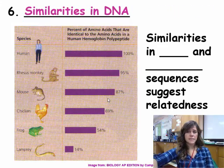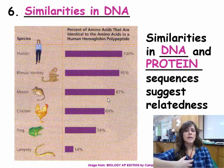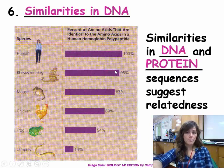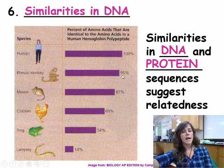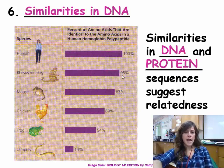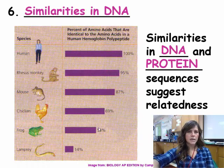DNA similarities: similarities in DNA sequences and proteins suggest relatedness. Looking at the percent of identical amino acids compared to human hemoglobin - a rhesus monkey has 95% of the same amino acids in hemoglobin as humans, so it's very closely related. As you go further down the list, the fewer amino acids in common, the less recently they descended from a common ancestor.